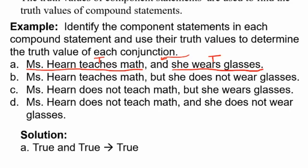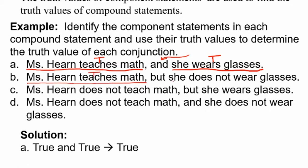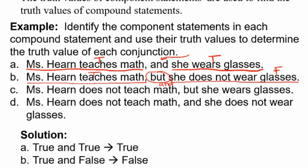For part A, the overall compound statement is true. Now let's look at part B: 'Miss Hearn teaches math, but she does not wear glasses.' 'Miss Hearn teaches math' is true, but 'she does not wear glasses' is false because I actually do wear glasses. The word 'but' is actually logically equivalent to 'and' because we're claiming both things are happening. Even though it has a different connotation in everyday language, it still logically means the same thing. So this would be false — saying 'Miss Hearn teaches math but she doesn't wear glasses' is false because an 'and' statement guarantees both parts are happening. So part B, true and false, is false.